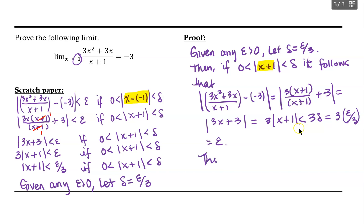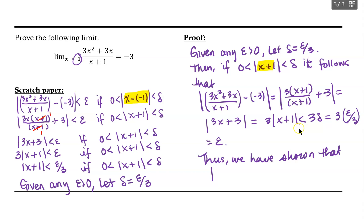Thus we have shown that if we let delta equal epsilon over 3, then the absolute value of 3x squared plus 3x over x plus 1 — our function — minus the value of our limit, which is negative 3, is less than epsilon.